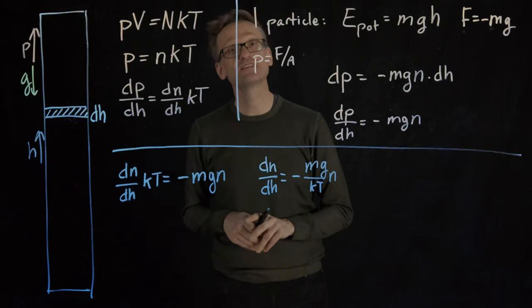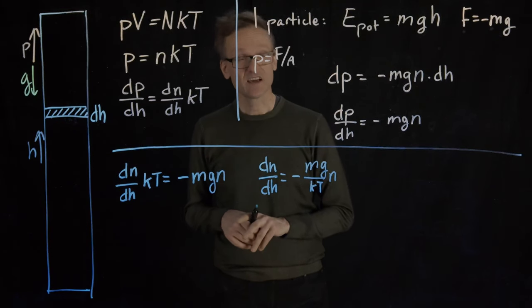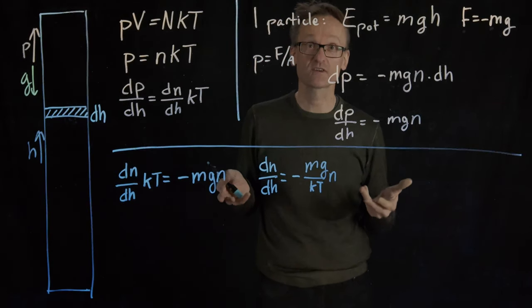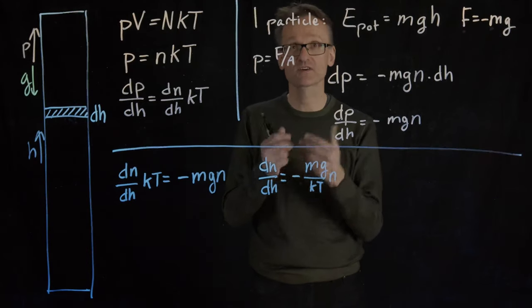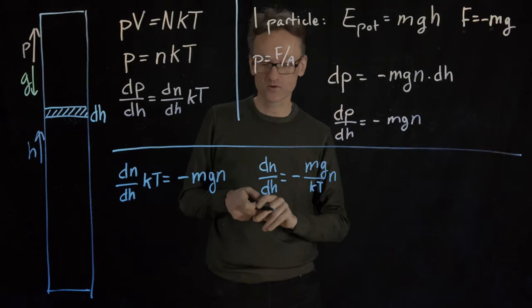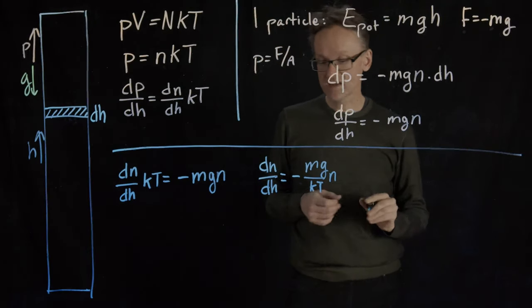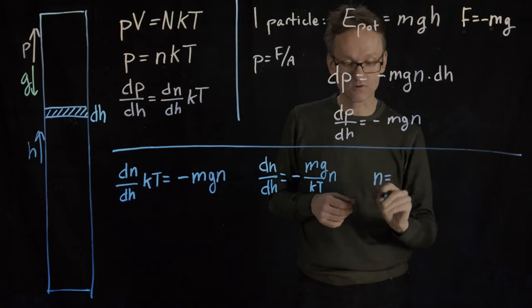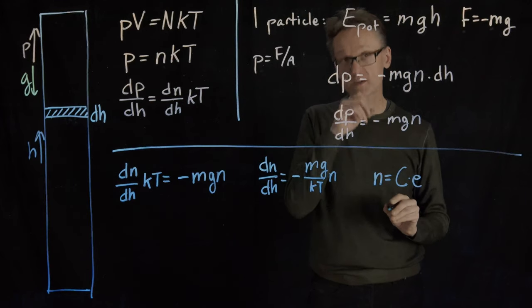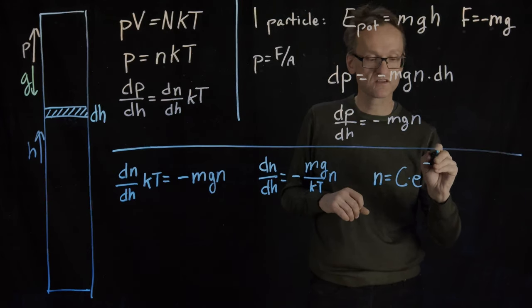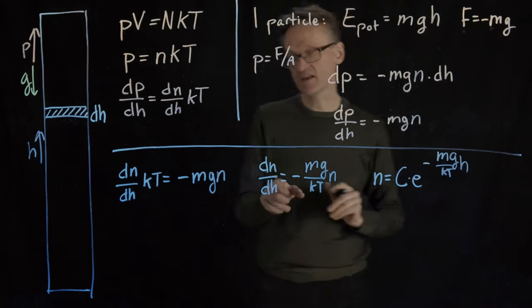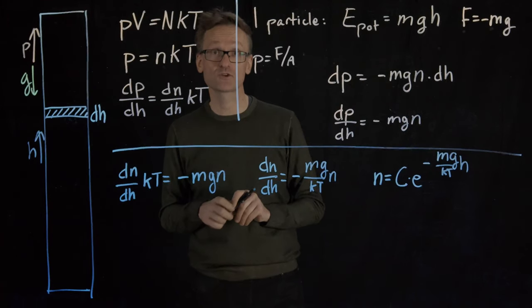You know what that function is. That is the exponential function. Actually it's not just the exponential function, a constant before the exponential function too. Any constant multiplied by the exponential function will have this property. And this extra term is then what shows up in the exponent. So based on that we can write that n equals C, the constant, multiplied by the exponent raised to minus mg divided by KT multiplied by the variable h, that was the variable that we had that n was a function of.